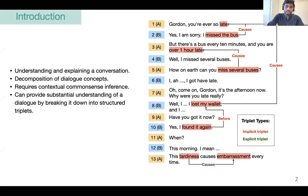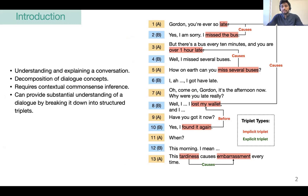Understanding and explaining a conversation requires the decomposition of dialogue concepts and connecting them through definitive relations. The process of breaking down dialogues into such explanations is grounded in the context and requires common sense inference.